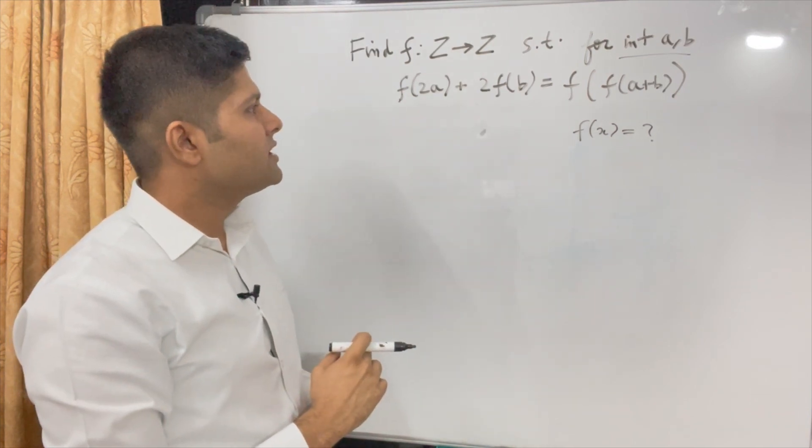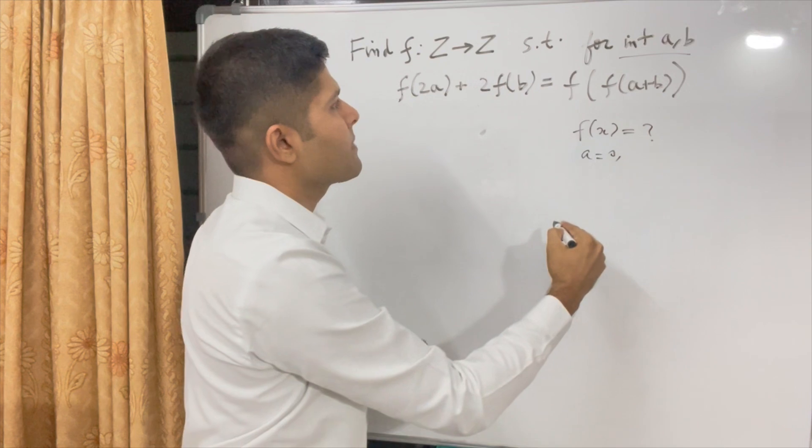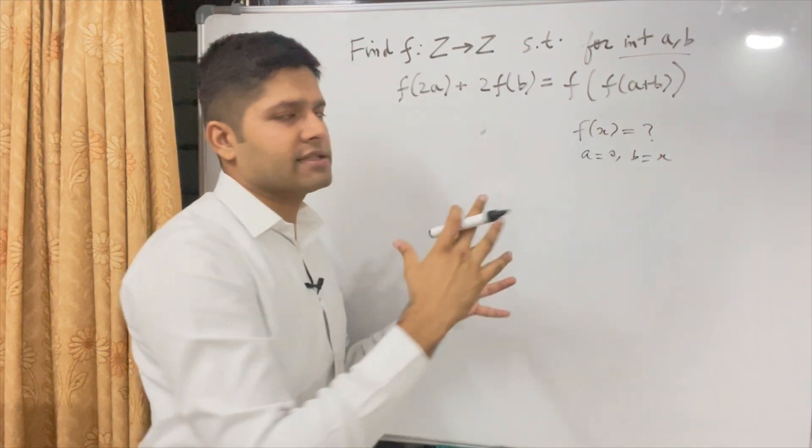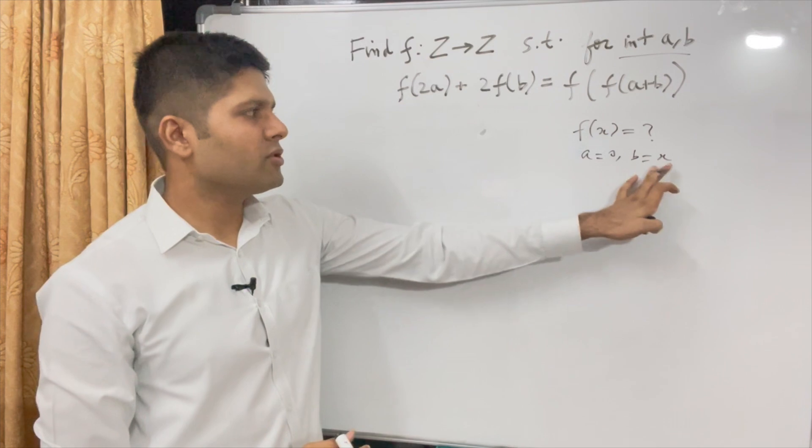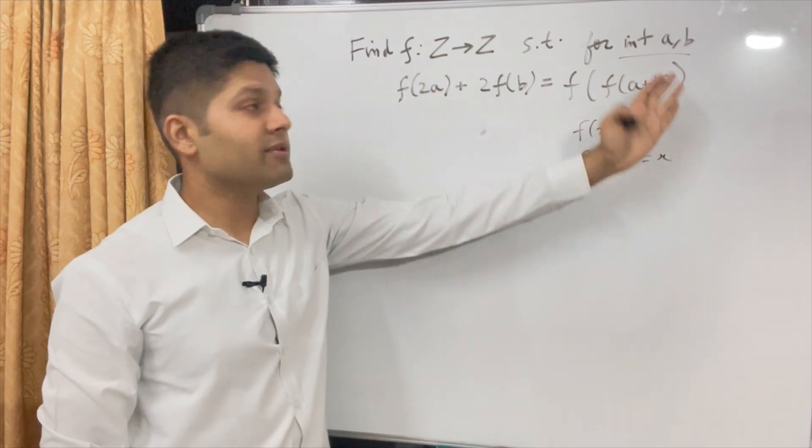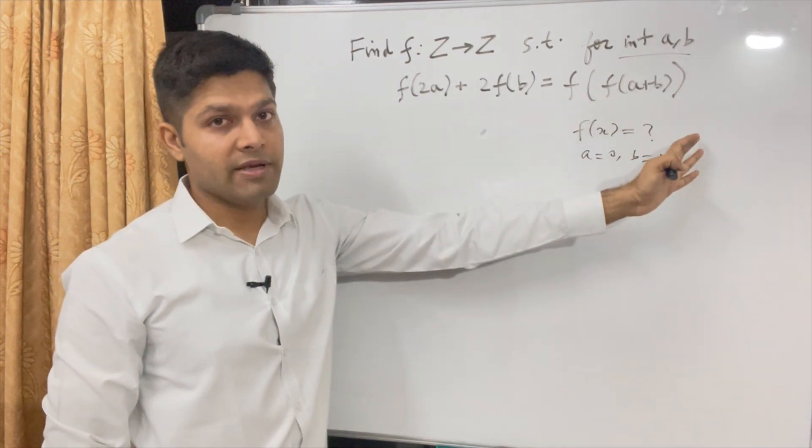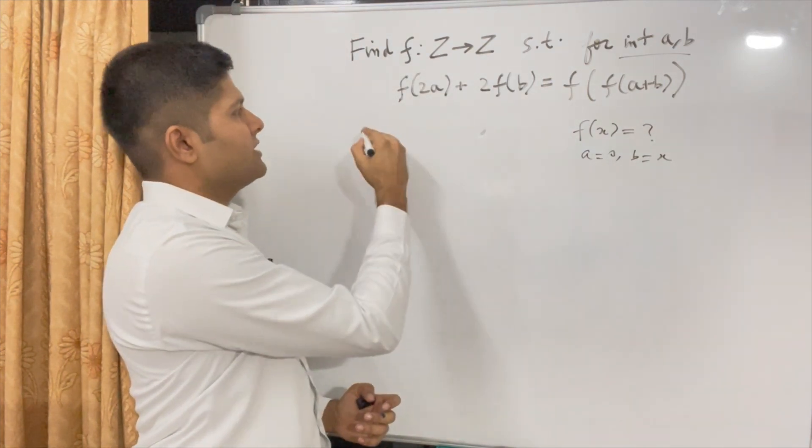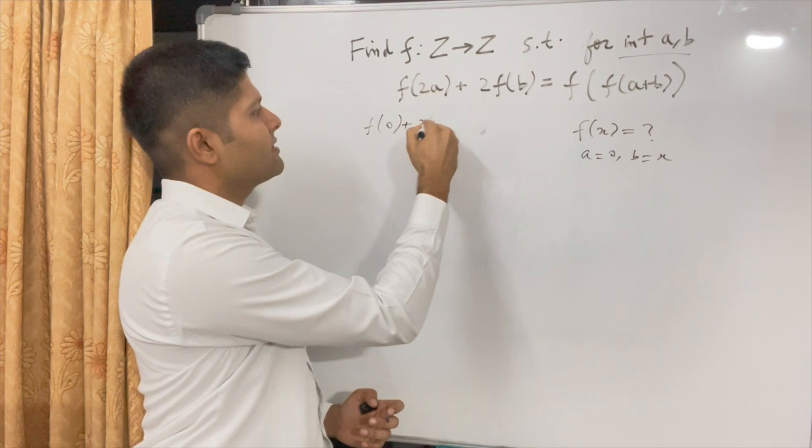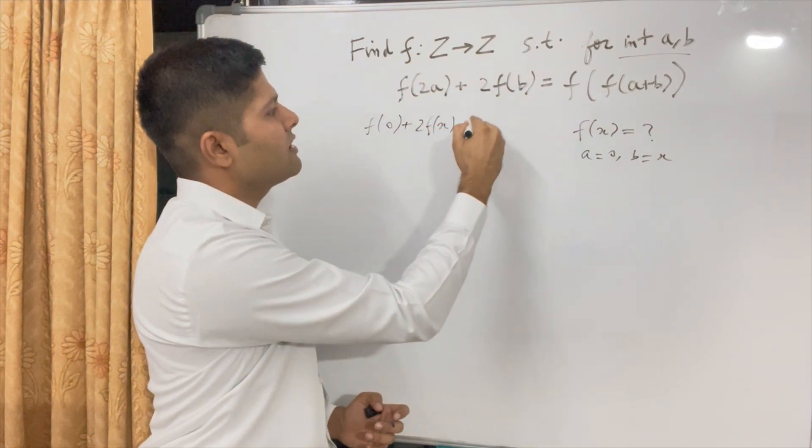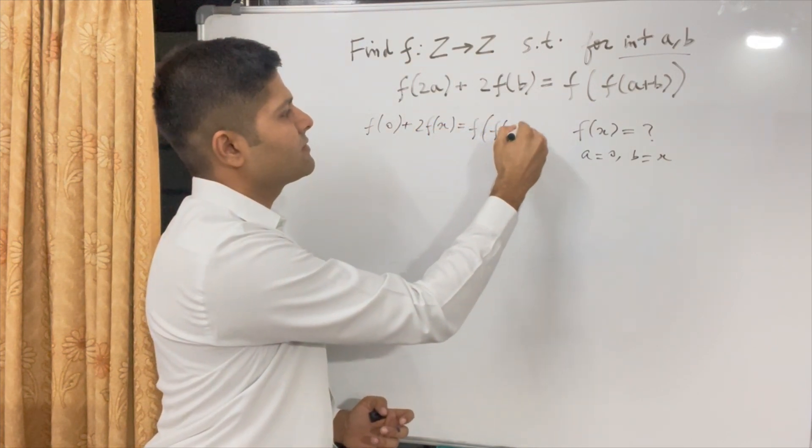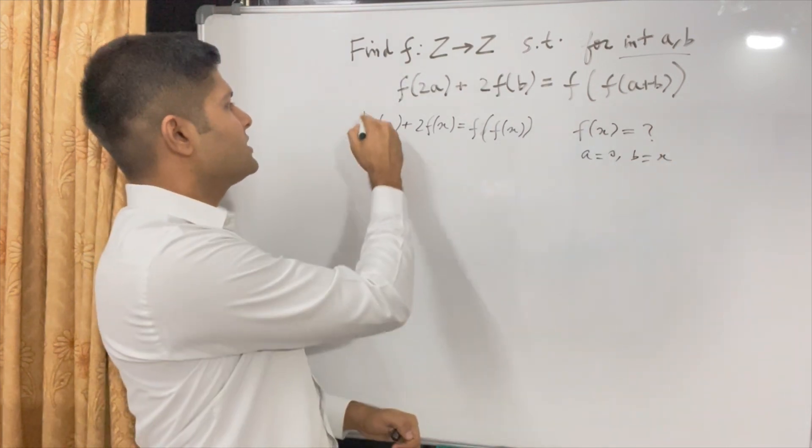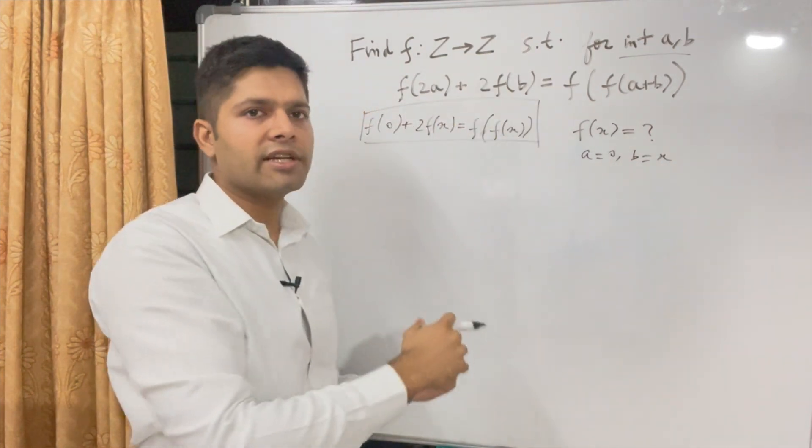So why don't we put a equal to 0 and we put b equal to some random x. Both of these are integers. So this equation will be satisfied because this is valid for all integers a and b. So if we put a equal to 0, then this is f(0) + 2f(x) = f(f(x)). This is one result that we get. This will be useful later on.